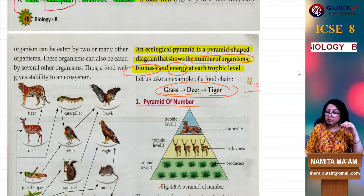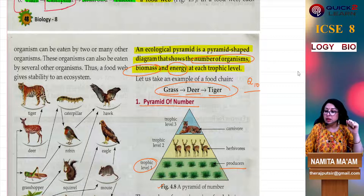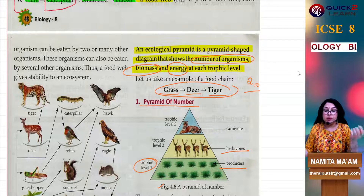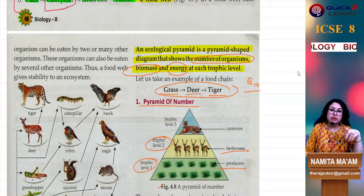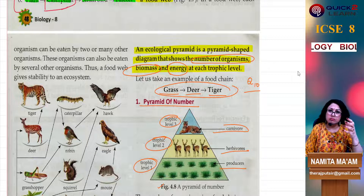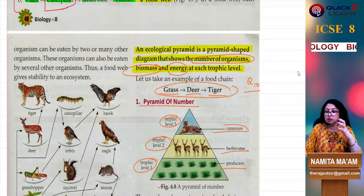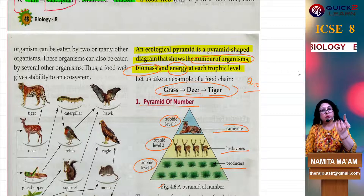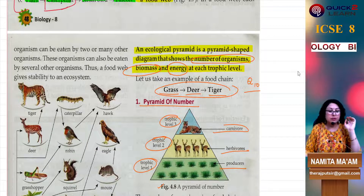Look at the pyramid of numbers diagram. Trophic level 1 is occupied by the producers — grass or green plants. They are eaten by the herbivores, the population of deer, representing trophic level 2, the first level of consumers. Then in trophic level 3 there is a carnivorous animal, the second level of consumers — the tigers, or you can take lion, panther, or leopard. This represents a pyramid of numbers. Grass will be the highest number, then deer, and at the top the carnivores will be the fewest.